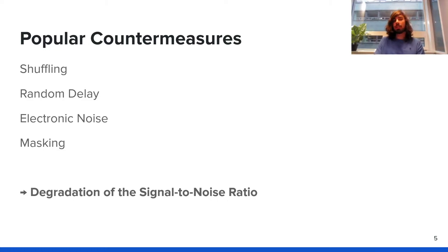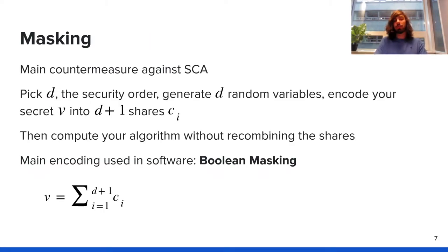In order to protect against this type of attack, several countermeasures have been designed, such as shuffling the order of operations, introducing random delays in the trace, adding electronic noise with capacitors, and the one that's going to be the focus of this talk: masking. All those countermeasures aim at degrading the signal-to-noise ratio, because the amount of traces required to recover the secret is inversely proportional to the signal-to-noise ratio.